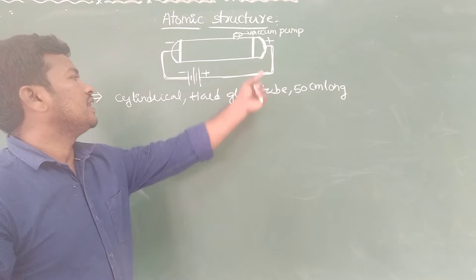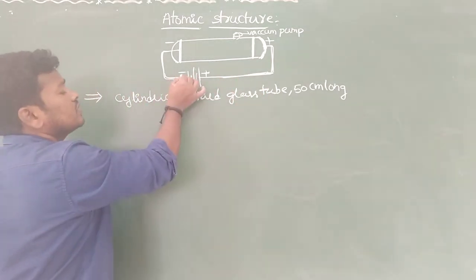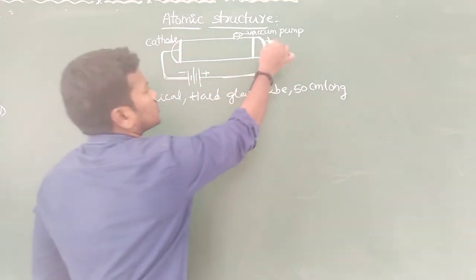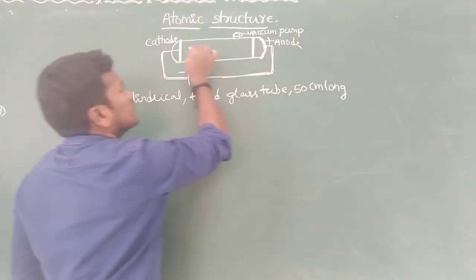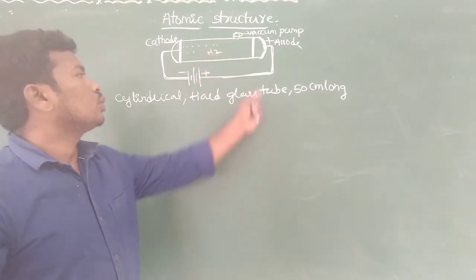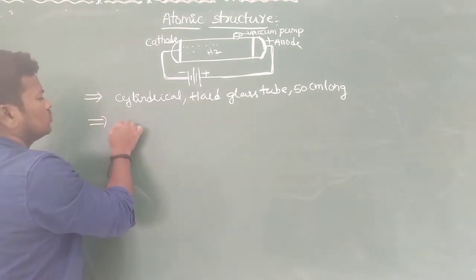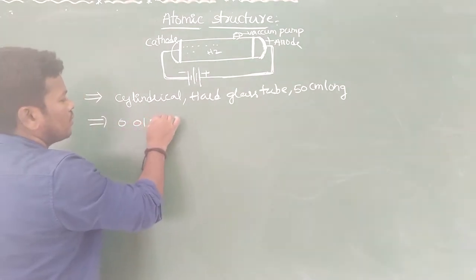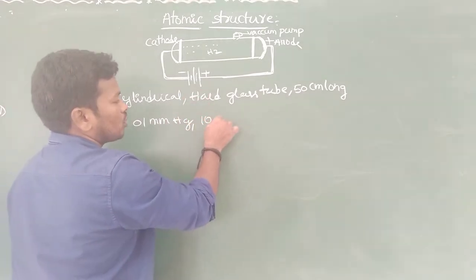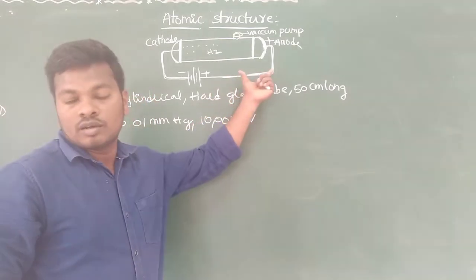These two electrodes are connected with the battery. One end is connected with the positive terminal and one end is connected with the negative terminal. The end connected with the negative terminal is called the cathode, and the other is the anode. Inside the tube they used hydrogen gas, and to adjust the pressure a vacuum pump was used. The pressure was kept at approximately 0.01 mm of Hg, and a high voltage of approximately 10,000 volts was applied across the electrodes.